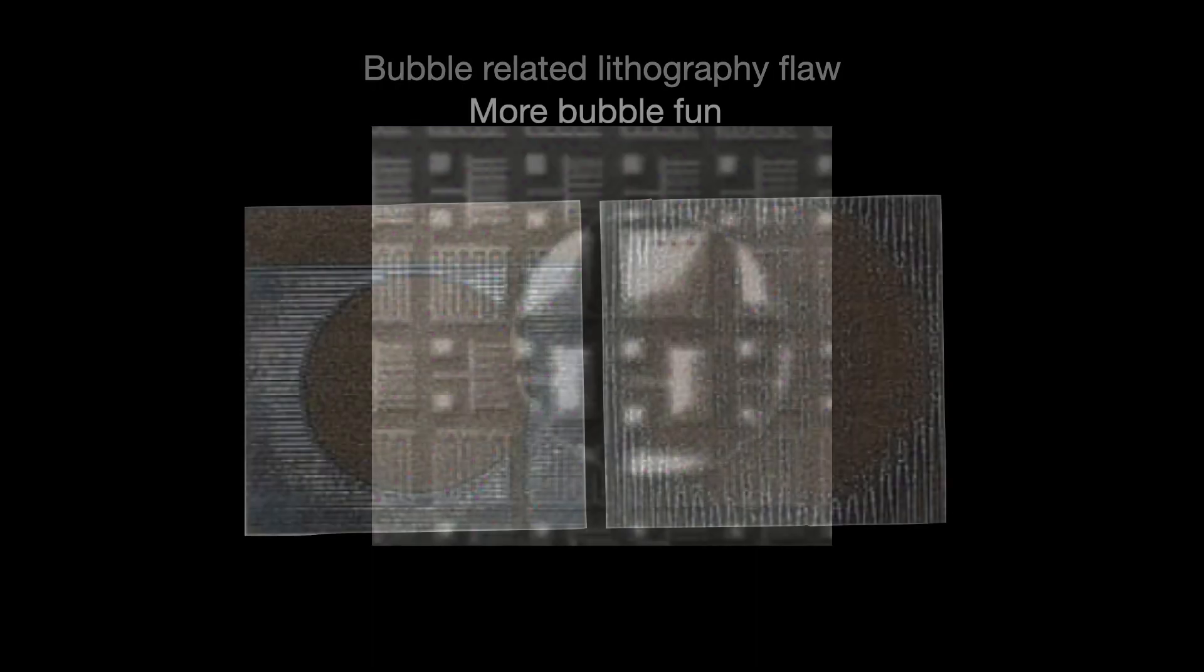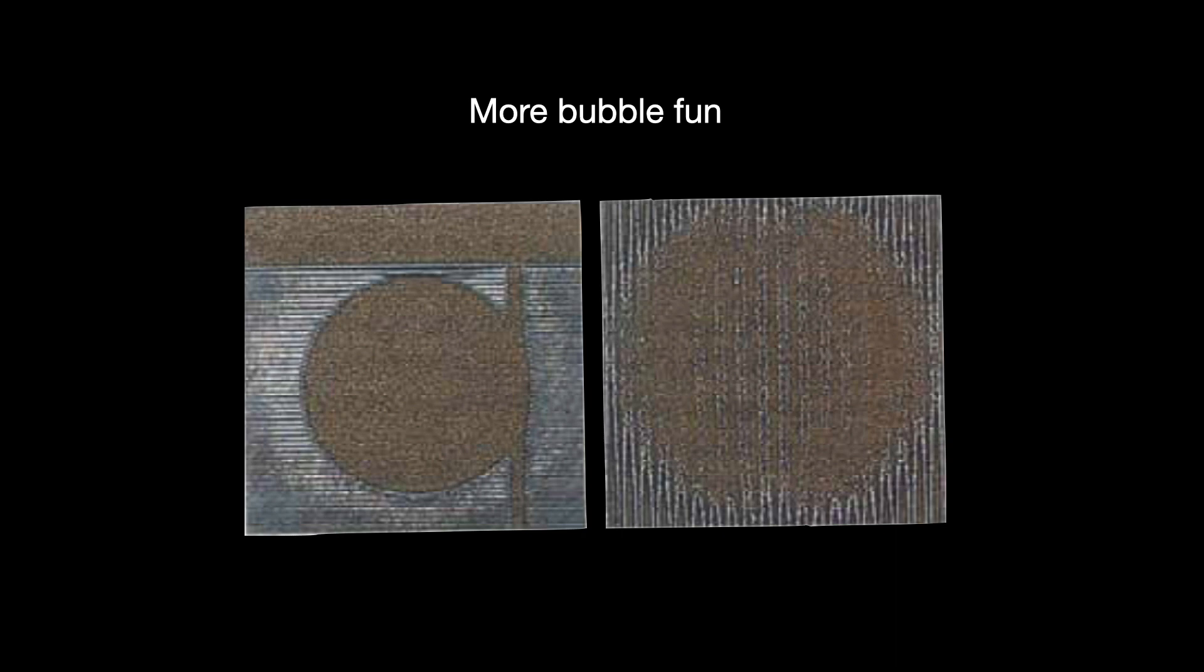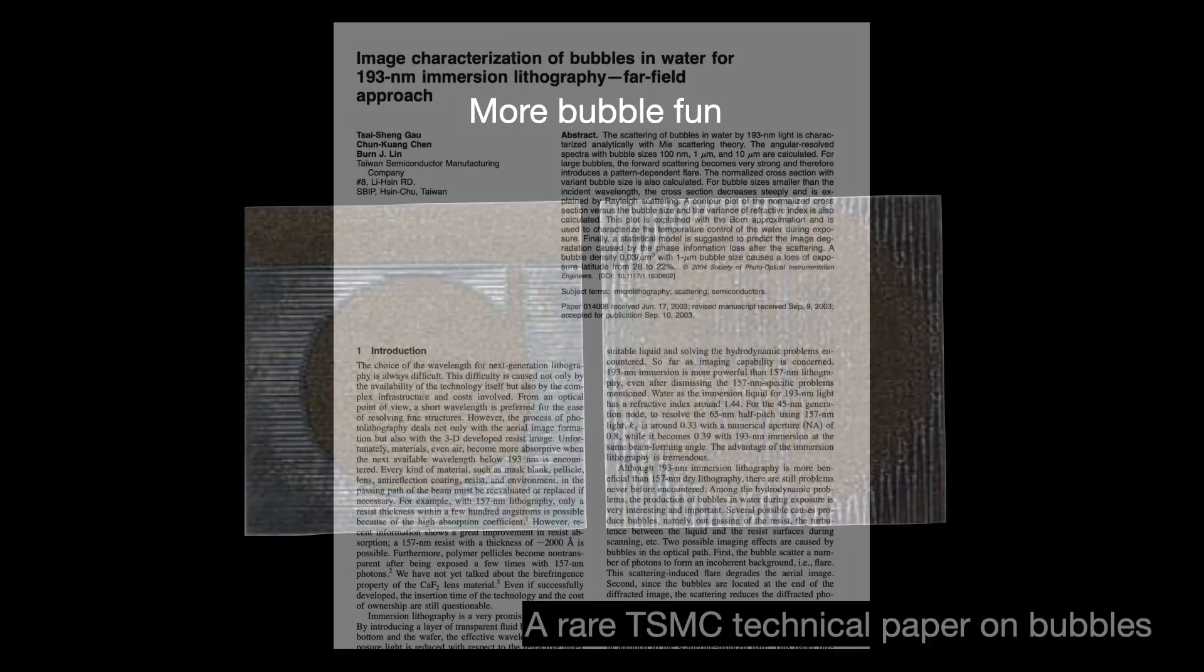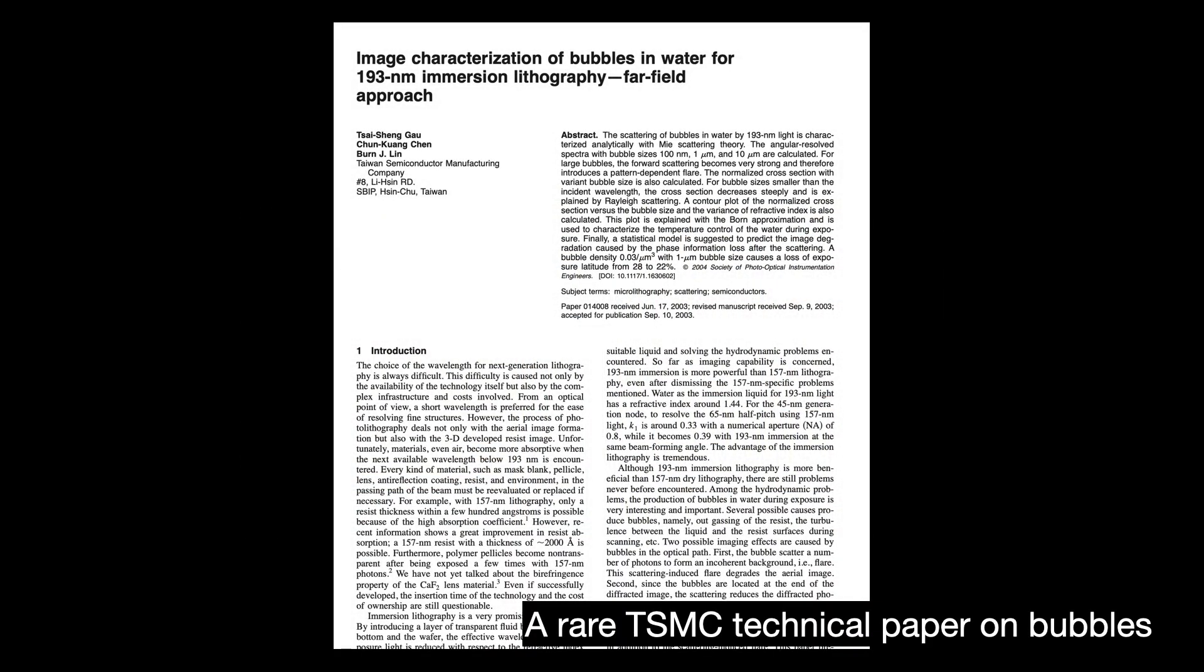And second, it weakens the DUV beam's power because photons are being carried away. A weaker beam means that the chip design image won't be as strongly imprinted onto the wafer. They eventually learned that foundries would have to de-gas the water before it enters the immersion zone. De-gassing is now a regular part of the ultra-pure water generation cycle.